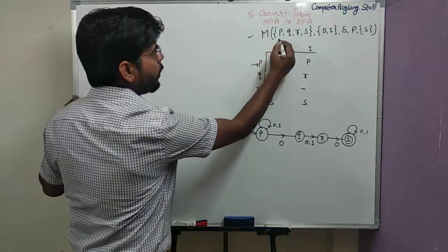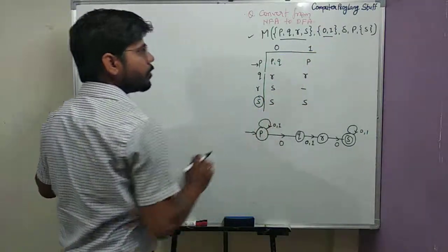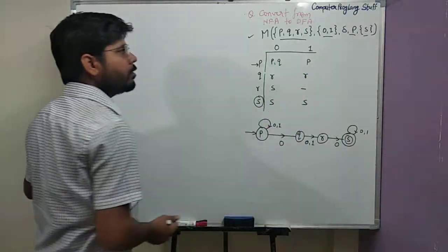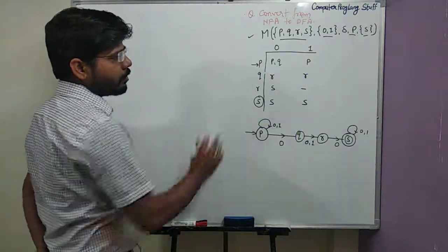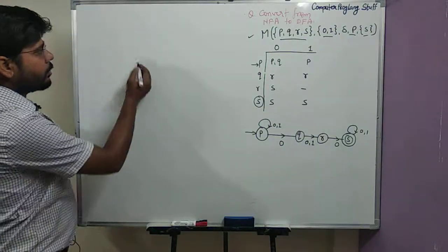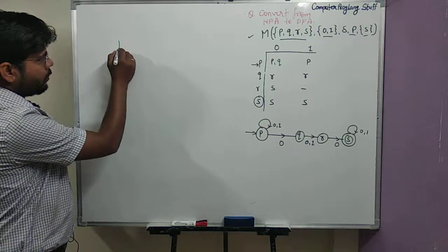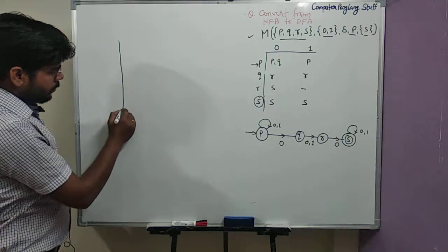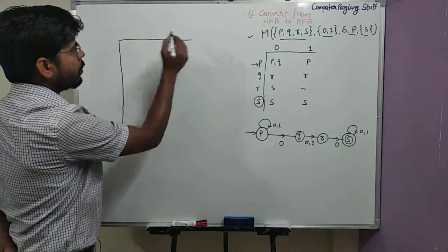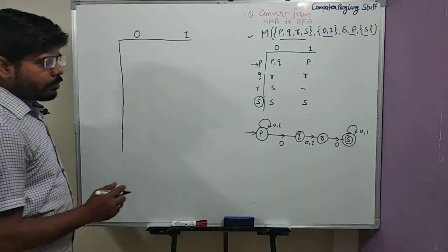This is a machine with four states, input symbols 0 and 1. P is the starting state and S is the final state. This is our transition function in tabular form. To convert to DFA, we write the input symbols 0 and 1 as column headers.